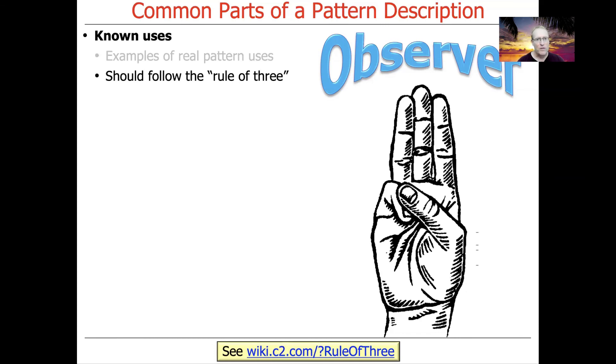You should try to follow the rule of three if you're writing a pattern. If you're going to write a pattern, then you need to find at least three independent examples that you didn't create to demonstrate that something is a pattern. Otherwise, it may just be a good, interesting design or what we sometimes call a proto pattern. A proto pattern is a potential pattern that doesn't have enough known uses to really qualify itself as a pattern at this point.